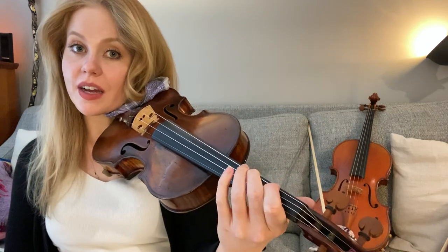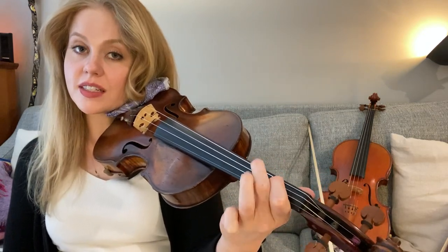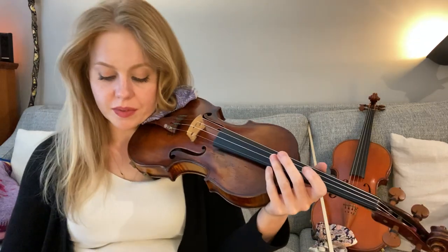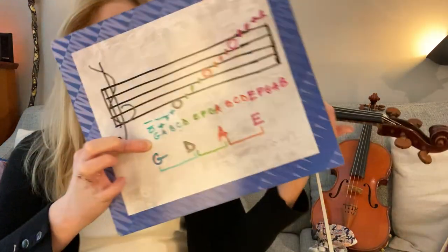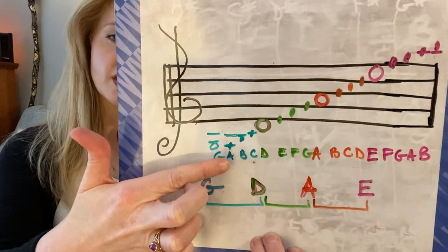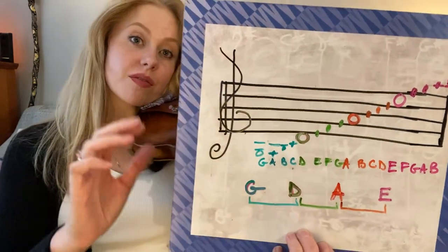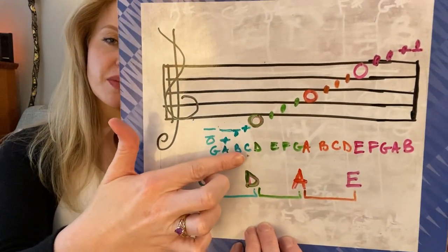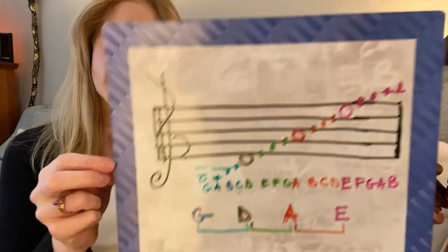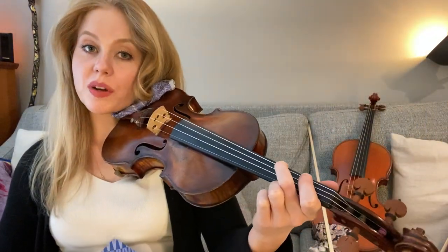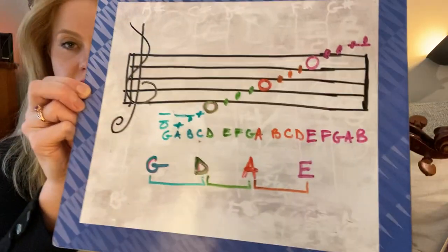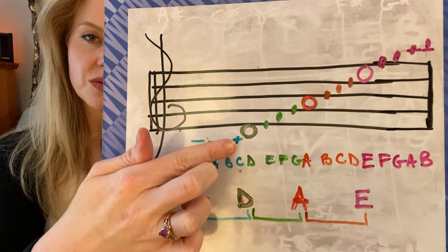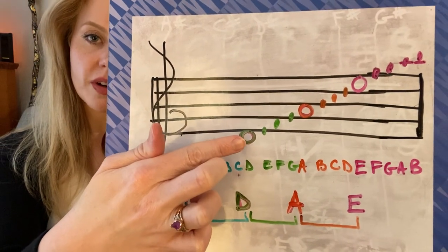Now once I start putting my fingers down, each finger is its own note — a new note. So let's say I'm on the G string and I put my first finger down. It's going to be the note A — it could be an A flat or A natural, depending on where I put my first finger. Second finger can be the note B — a B flat or B natural, depending on where I put it. Third finger is right here, actually right before open D.